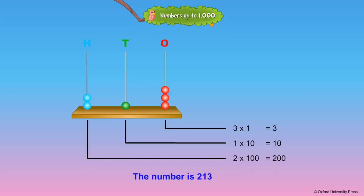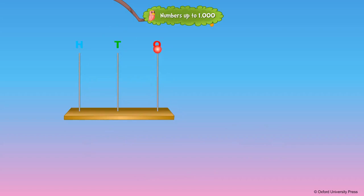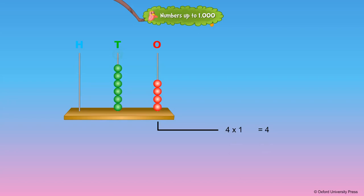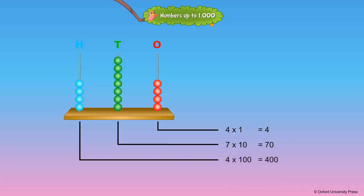The number is two hundred and thirteen. Let us see another number on the abacus. The number is four hundred and seventy-four.